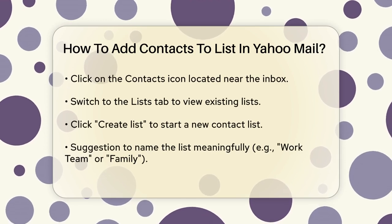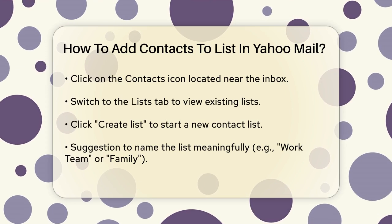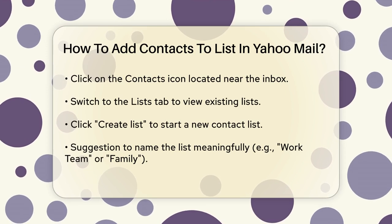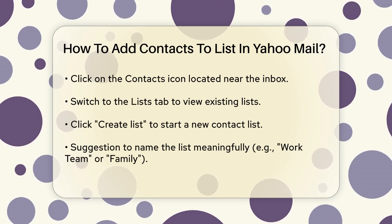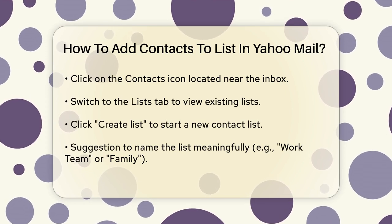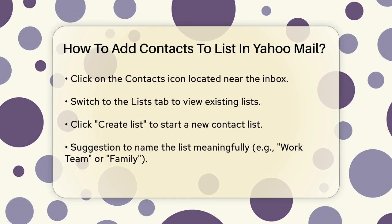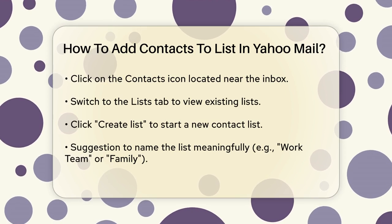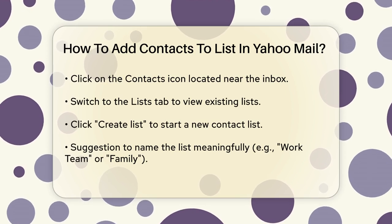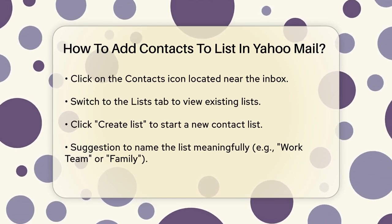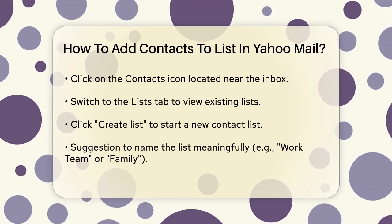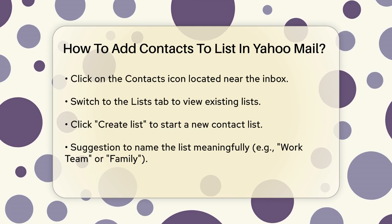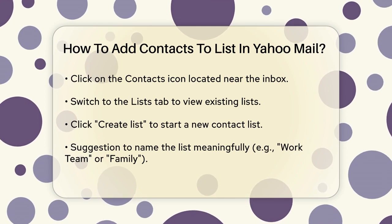Once you're in the Contacts section, switch to the Lists tab. Here, you'll see any existing lists you've created. To create a new list, click the Create List option. Name your new list something that makes sense, like Work Team or Family.